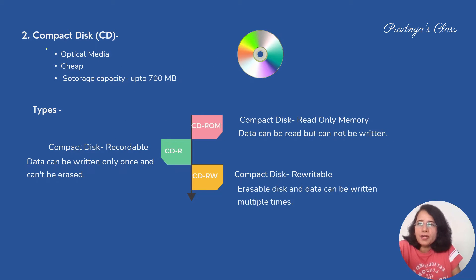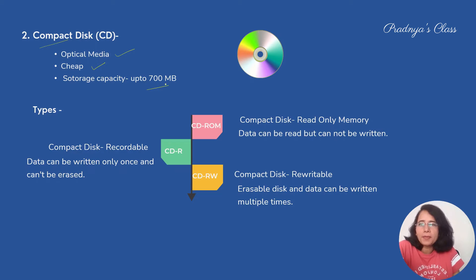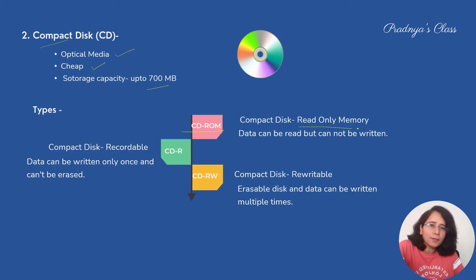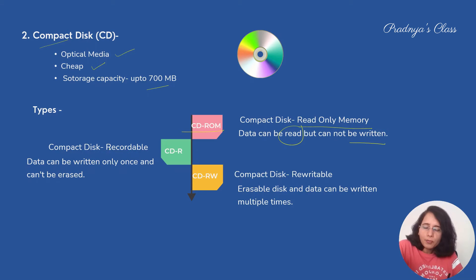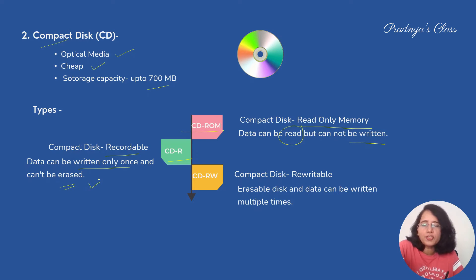The next storage device is the CD — an optical media. It is cheap and the storage capacity can be up to 700 MB. There are different types of CD: CD-ROM (Compact Disk Read-Only Memory), where we can read but not write data; CD-R (Compact Disk Recordable), where we can write data only once but cannot erase it — generally used for software; and CD-RW (Rewritable), where data can be written multiple times.